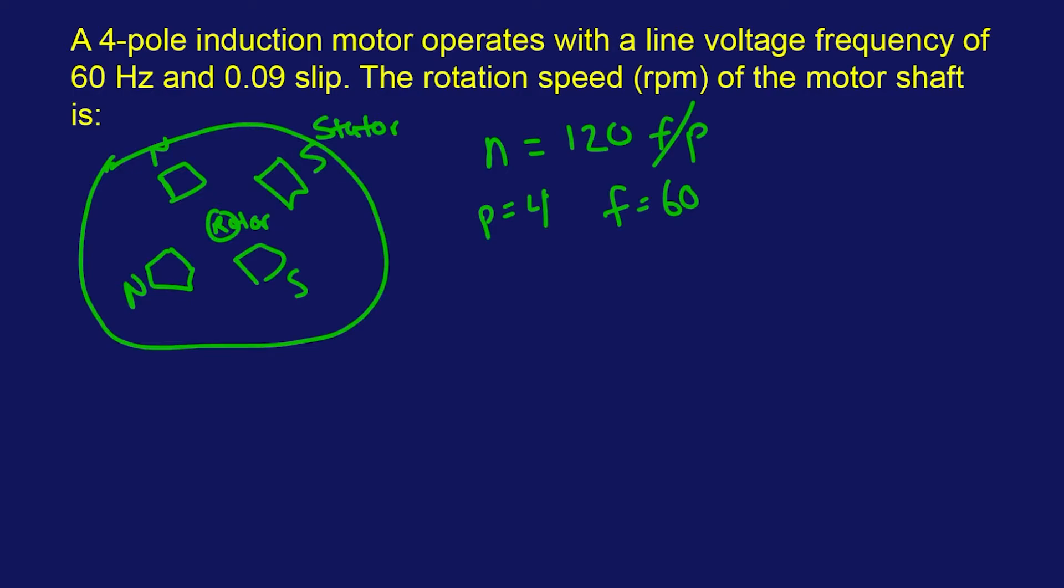So we're going to solve for the rotational speed of the motor or rotor, which is going to be 120 times 60 divided by four. That should be 180. No, 1800. I almost did it again where I messed up the calculation. And that's going to be the rotation of the motor, synchronous speed I should say, of the motor.